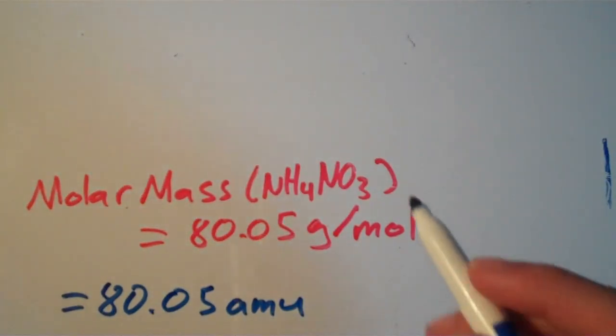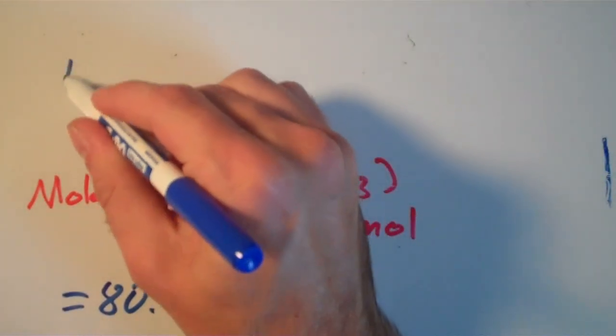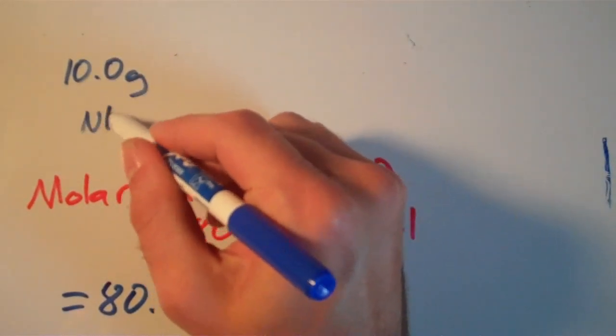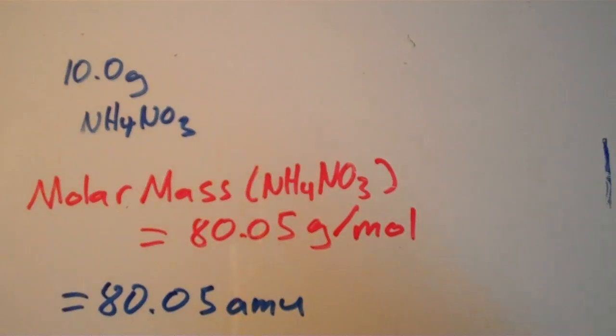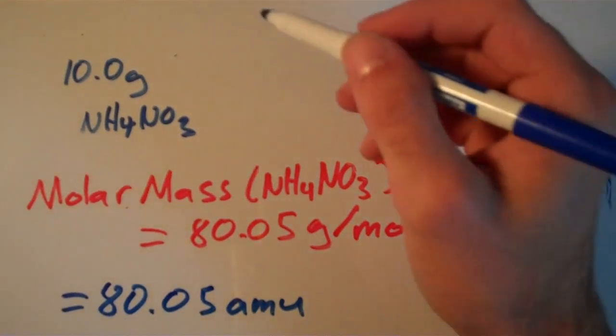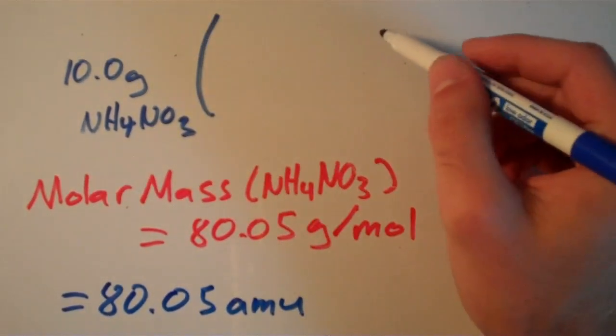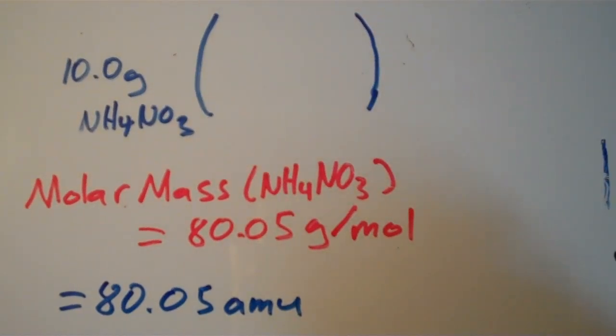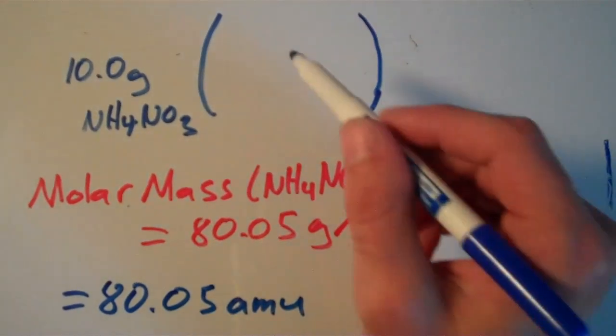So suppose I weigh out 10.0 grams of ammonium nitrate. Well, I can set up a conversion factor, and I can figure out how many moles that is. So 10.0 grams of ammonium nitrate.